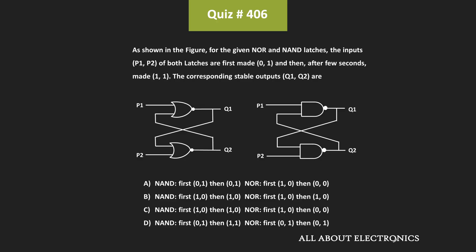Hey friends, welcome to the YouTube channel All About Electronics. So in this question, we have been given the NOR and NAND gate based two latches. And in these two latches, their inputs P1 and P2 are changed in a specific sequence. So here, we have been asked to find the corresponding stable outputs of the two latches.